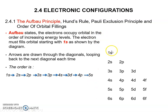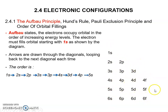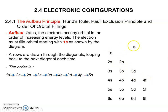To remember the sequence, write 1s, 2s, and the following sublevels — p, d, and f. S starts with number 1, p starts with number 2, d with number 3, and f starts with number 4. Then draw the arrow.